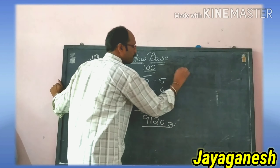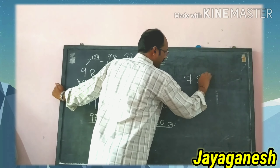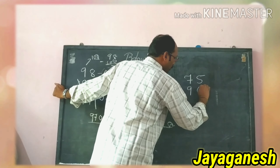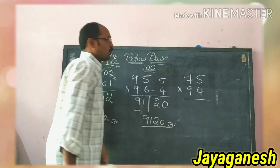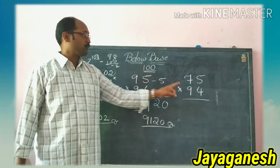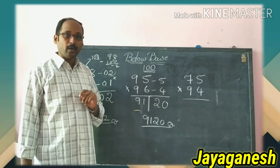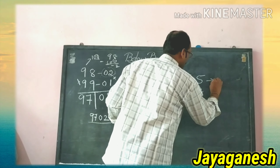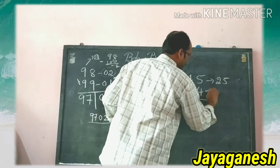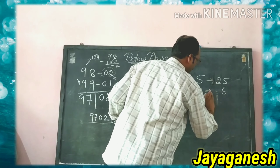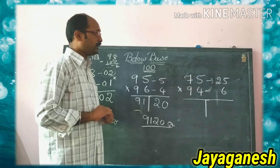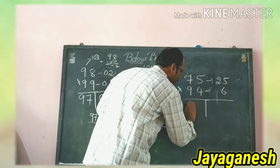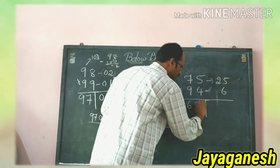One more question: 75 into 94. Here, one number is very far from the base but at least one number is very near to the base, which satisfies the condition. The differences are minus 25 and minus 6. Doing the cross subtraction: 94 minus 25 gives 69, which is the left side answer.